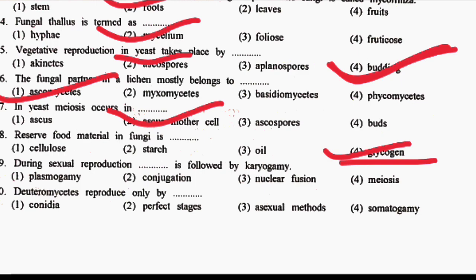Next question: during sexual reproduction in fungi, DASH is followed by Karyogamy. Option 1: Plasmogamy. Option 2: Conjugation. Option 3: Nuclear Fusion. Option 4: Meiosis. The correct answer is Option 1, that is Plasmogamy. In fungi, sexual reproduction involves three stages: Plasmogamy, then Karyogamy (fusion of nuclei), then Meiosis.